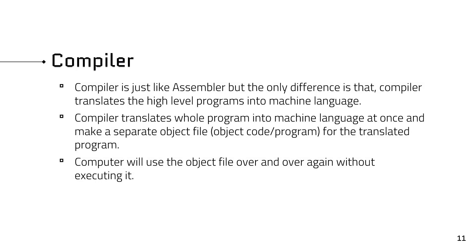A compiler is just like an assembler, but the only difference is that a compiler translates high-level programs into machine language. The compiler translates the whole program into machine language at once and makes a separate object file for the translated program.